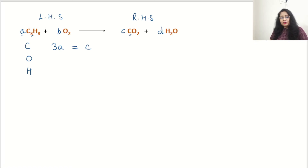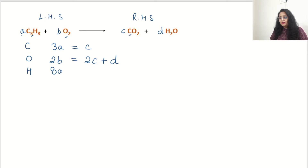For oxygen, on the left hand side we write 2B, and on the right hand side we have 2C plus D. For hydrogen, on the left hand side hydrogen is 8A, and on the right hand side it is 2D. So now we have three equations to solve.